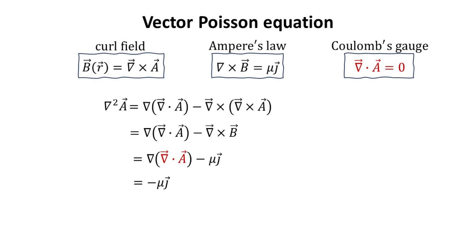Without any loss of generality in terms of physics, one can impose the Coulomb gauge, allowing us to set the first term to zero.